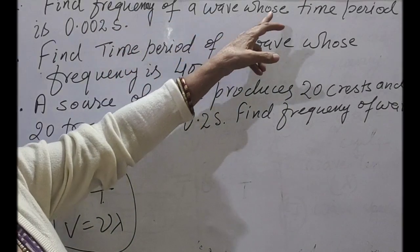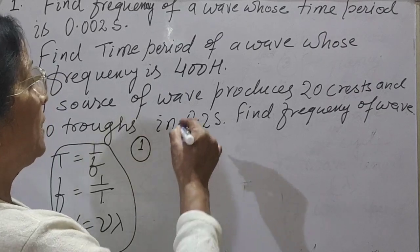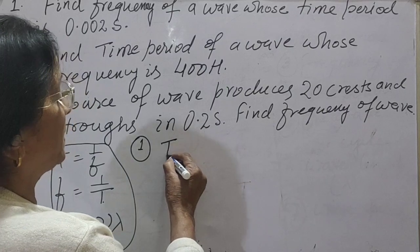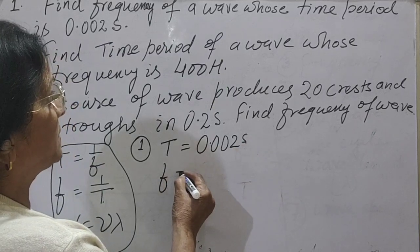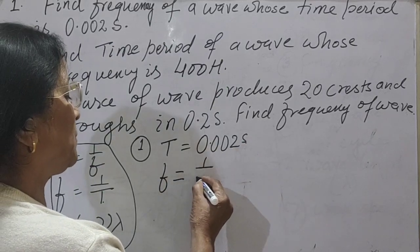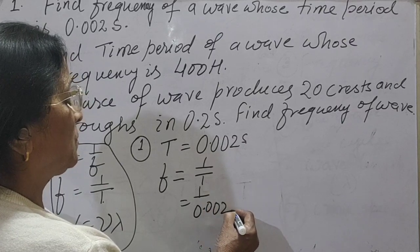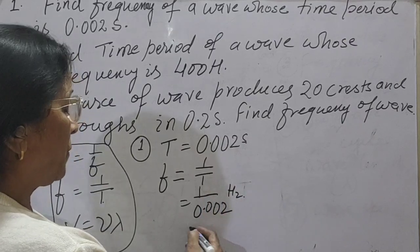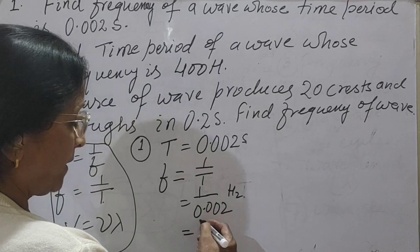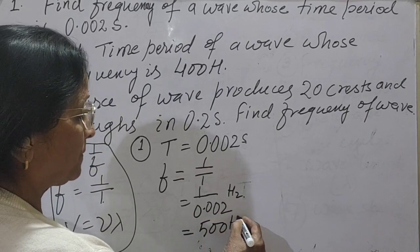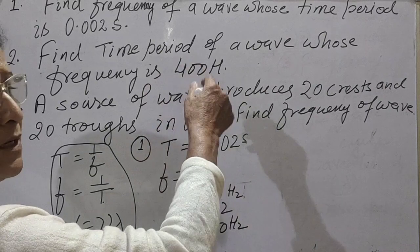First question: find the frequency of a wave whose time period is 0.002 second. Solution to question number one — time period is given as 0.002 second. We have to find frequency. Frequency is equal to 1 upon time period, that is 1 upon 0.002, which gives us 500 hertz. Very easy to solve — just for practice we have started with the easiest one.